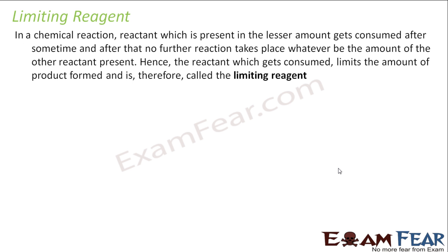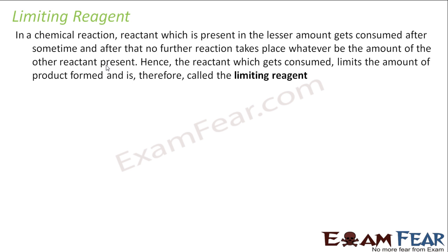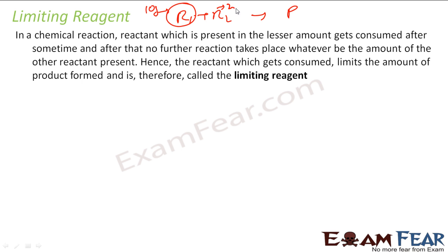Now we will understand something called limiting reagent. In a chemical reaction, sometimes we see that you have a reactant — one reactant group — that gives a product. Let's suppose this reactant is present in lesser quantity. For example, in this reaction we know that 10 grams of this reacts with 20 grams of this to give product. If you make the second reactant 20 but instead of 10 you only have 5, this first reactant will act as a limiting reagent because it is less in quantity than required.